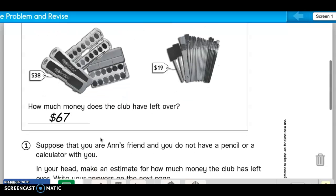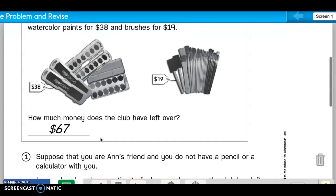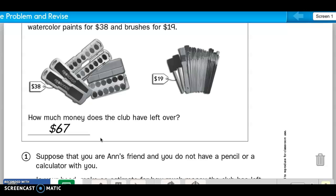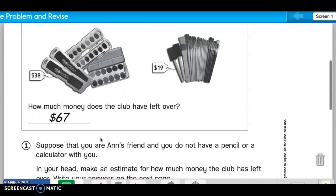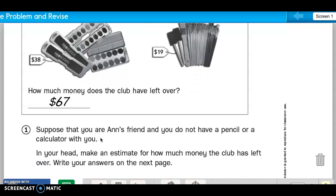Well, suppose that you are Ann's friend and you do not have a pencil or calculator with you. In your head, make an estimate. Remember, estimate is a closer number, easier closer number. How much money the club has left over.